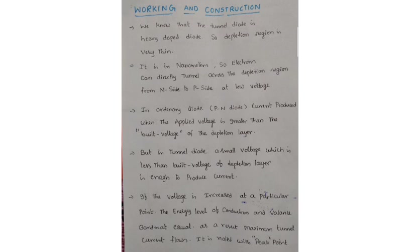Since the tunnel diode is heavily doped, the depletion region is very thin — in nanometers — so electrons can directly tunnel across the diffusion region from n-side to p-side at a low voltage. In a normal diode, an external voltage is needed to decrease the depletion layer, but in the tunnel diode, only a very low external voltage is needed for electrons to penetrate from one region to another, because the depletion layer is very weak compared to a normal diode.